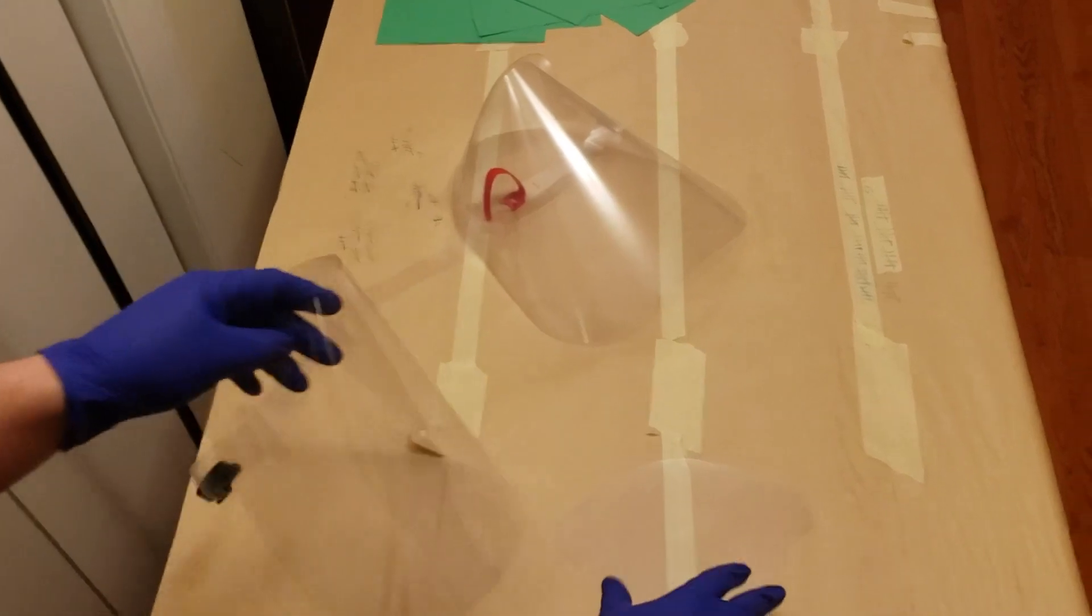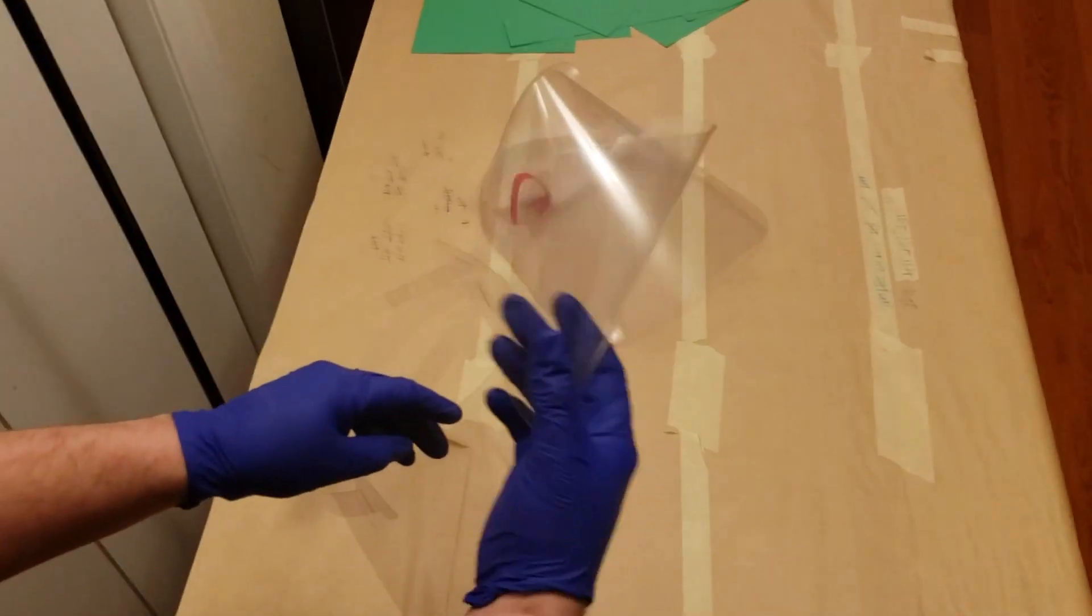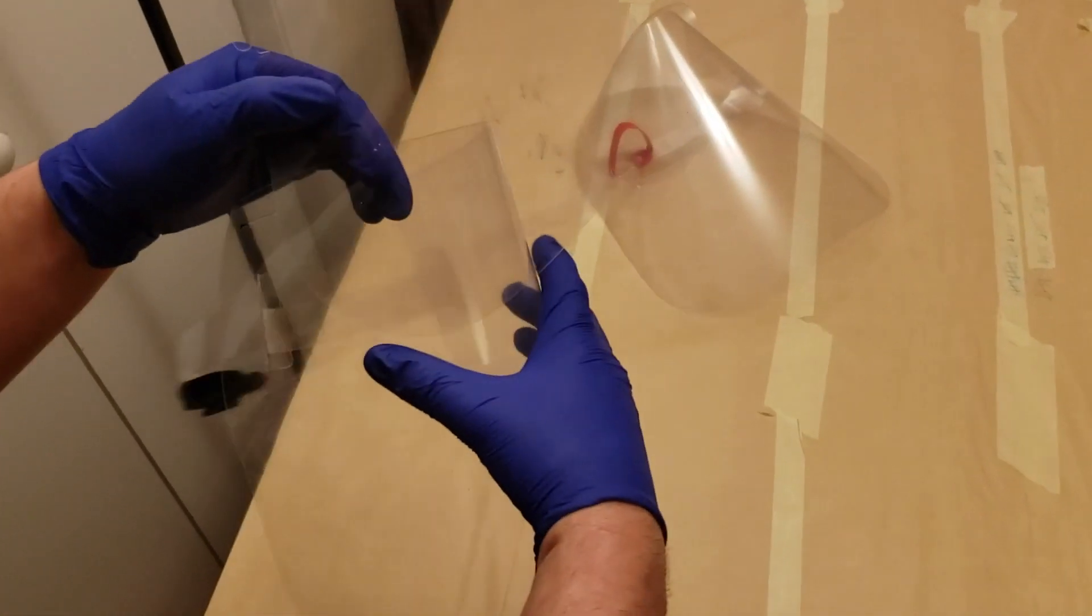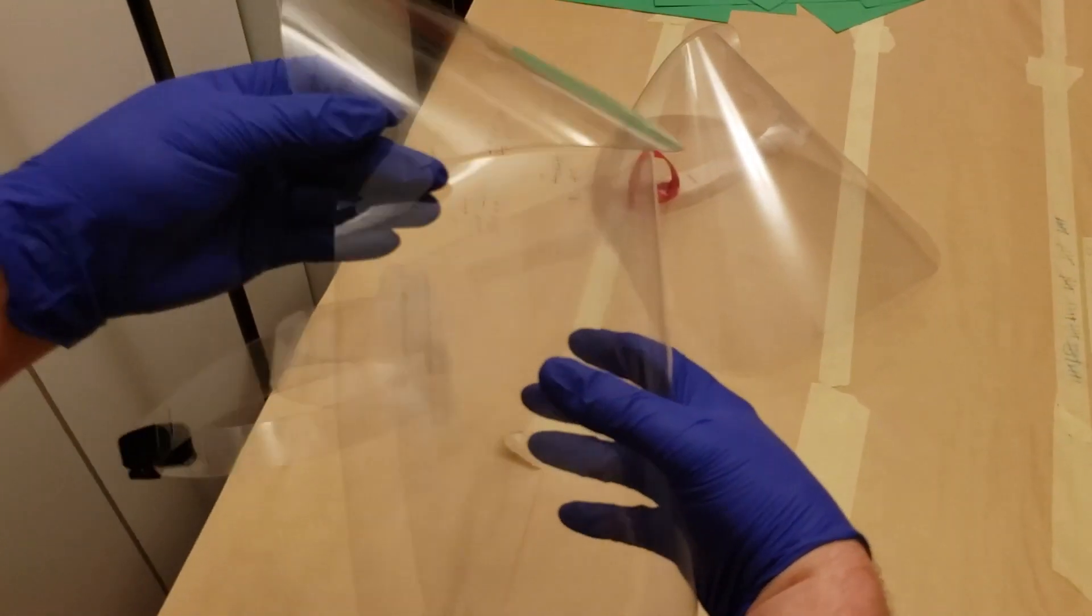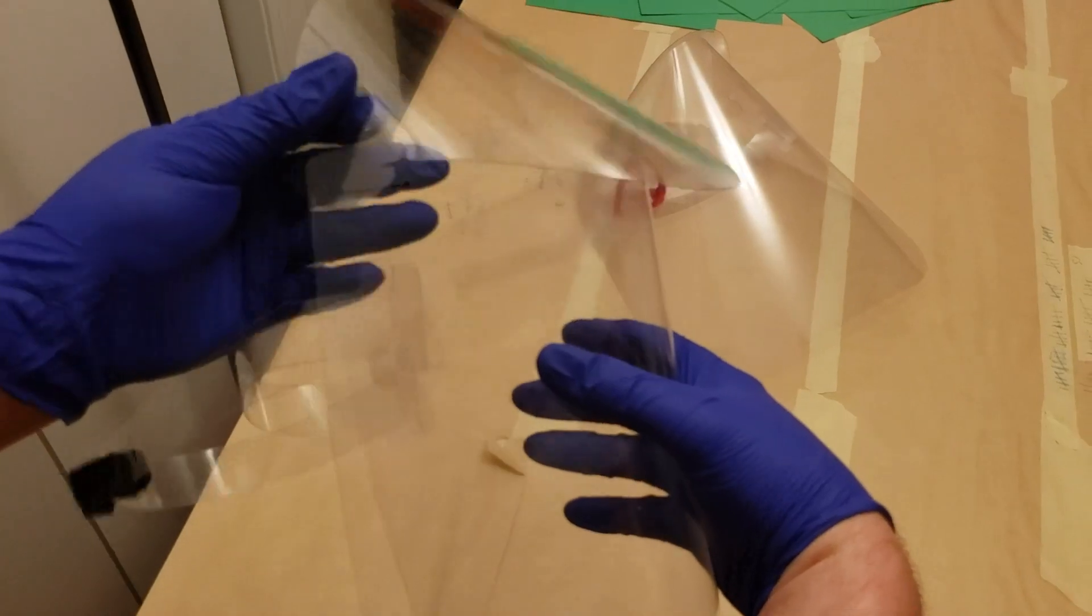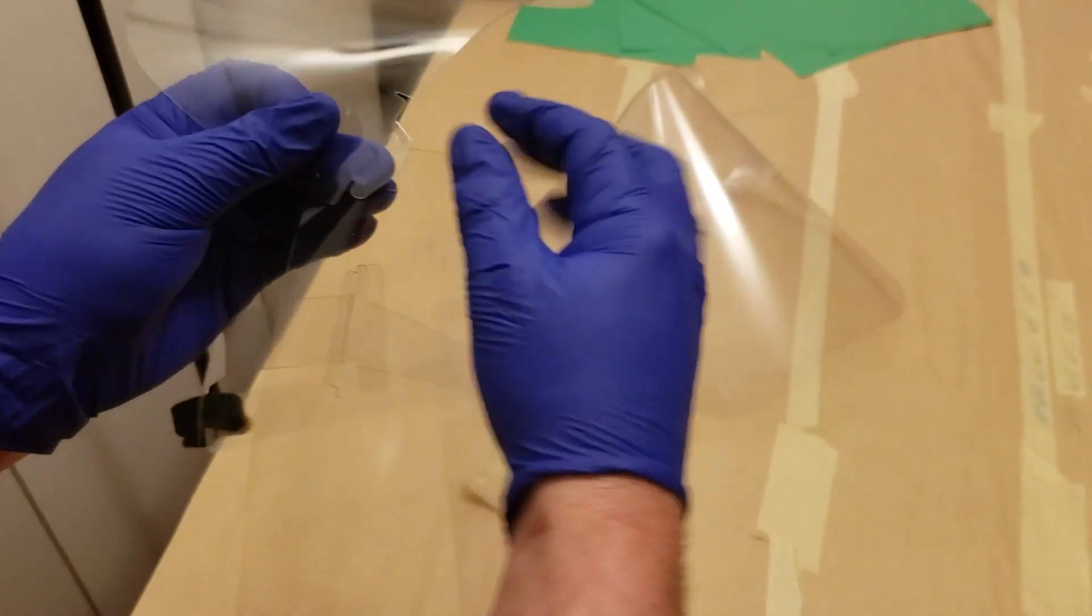So then we're going to assemble the top part. A lot of masks don't have this, but we're learning that it's pretty important. So basically this goes through here. And since the hole is too small, what I like to do is bend this little ear,